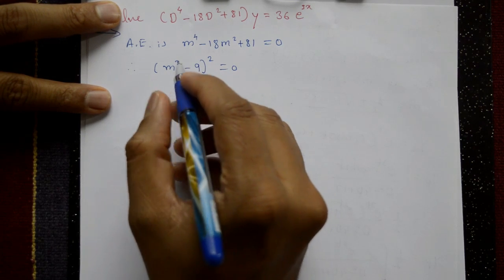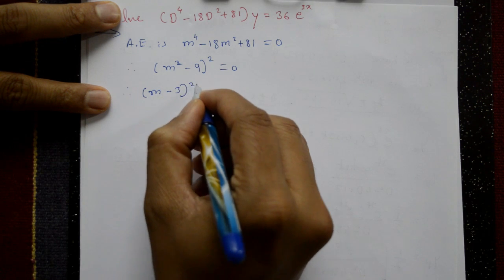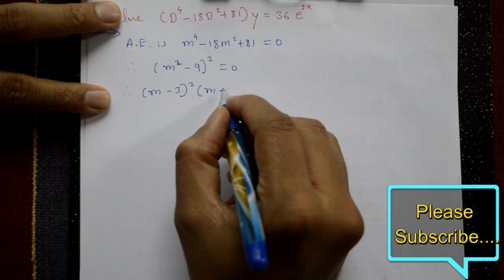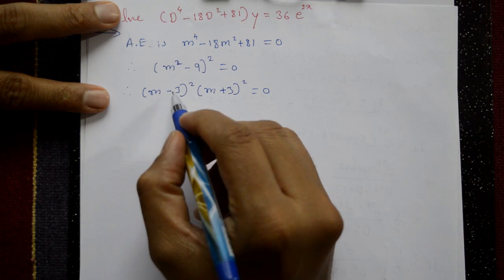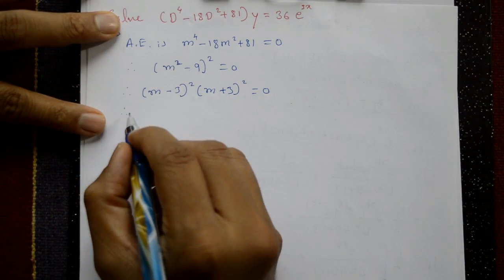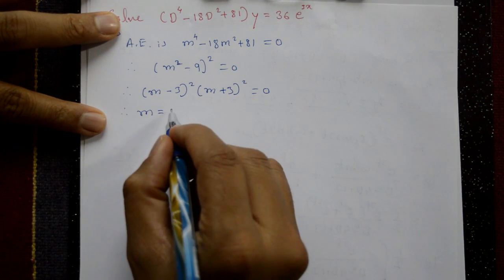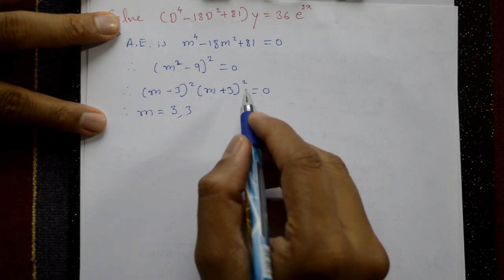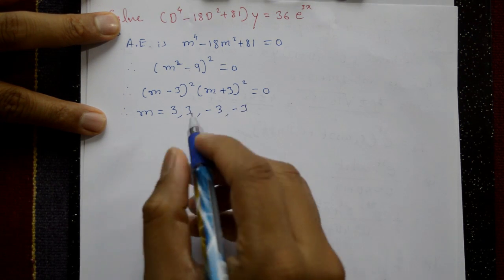This can further be written as (m - 3)² (m + 3)² = 0, using the identity a² - b² = (a - b)(a + b). Therefore m = 3 is a repeated root (two roots), and m = -3 is also a repeated root (two roots). So we have pairs of same roots: 3, 3 and -3, -3.